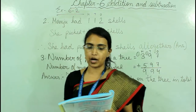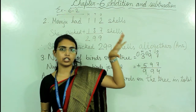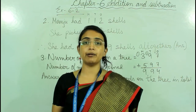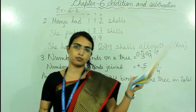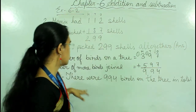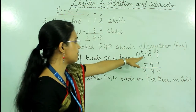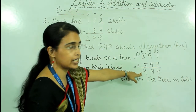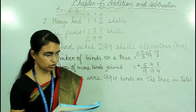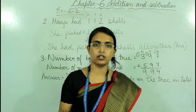Question number 3: there are 397 birds on a tree. After some time, 597 more birds joined them. How many birds are there on the tree altogether? Write: number of birds on a tree is 397, number of more birds joined is 597. Do the addition. The answer is 994. There were 994 birds on the tree in total. Questions 2, 3, and 4 are your homework. Now we will do exercise 6.3.